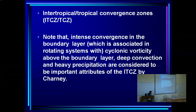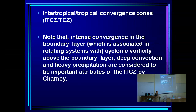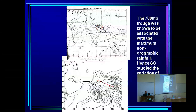Dynamically we have to show it is like the ITCZ. The distinguishing attributes of an intertropical convergence zone are: intense convergence in the boundary layer, cyclonic vorticity above the boundary layer at 900 or 850 hPa, deep convection, and heavy precipitation. If you have cyclonic vorticity above the boundary layer, you get convergence in the boundary layer and ascent. These are the must-have attributes of the ITCZ.